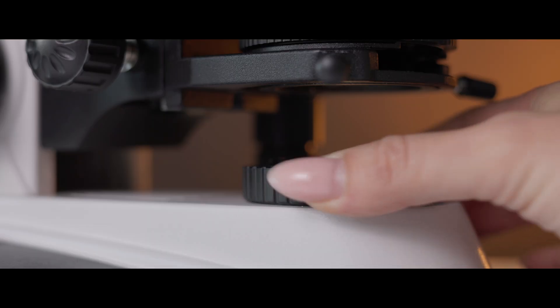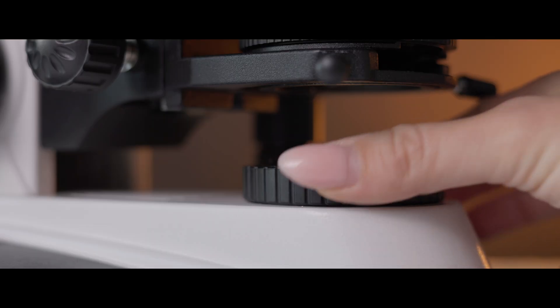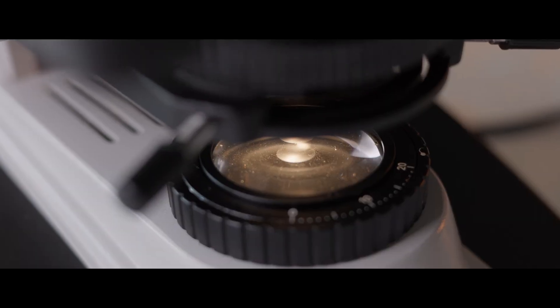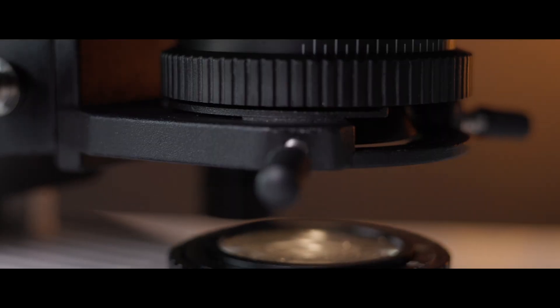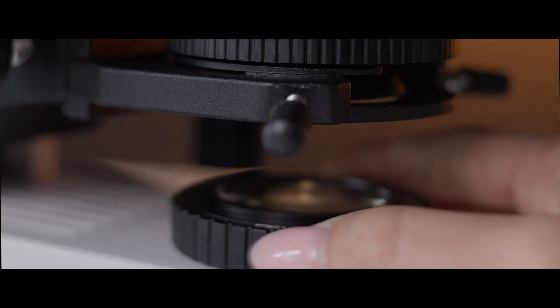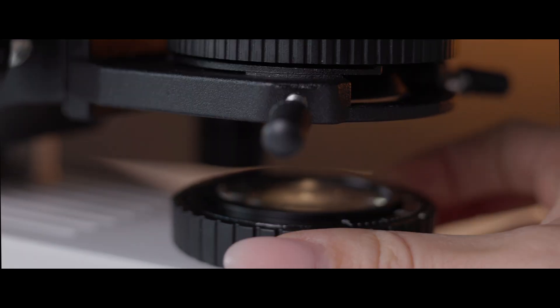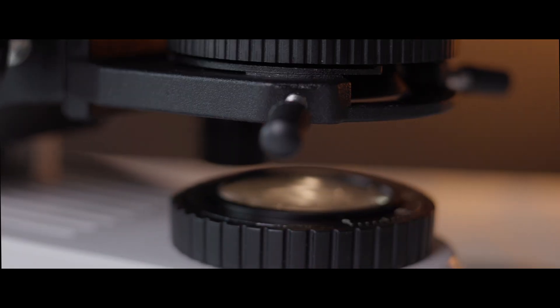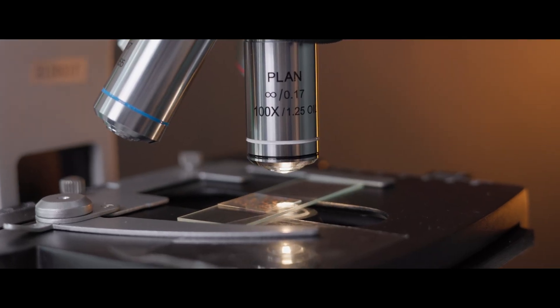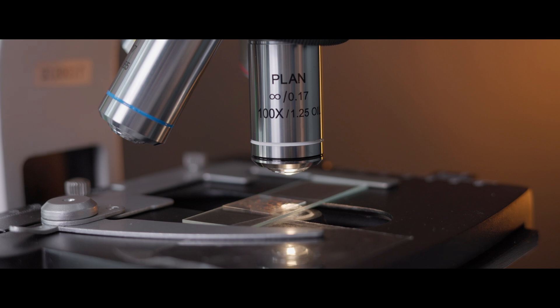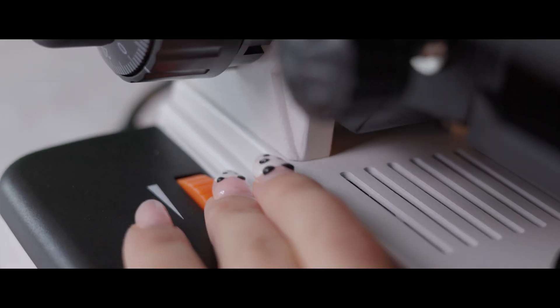When it comes to illumination, the OM139 really shines—literally. You've got a variable intensity tungsten halogen lamp, and the Koehler condenser makes sure every sample is lit perfectly. The 1.25NA Abbe condenser with an iris diaphragm and filter holder gives you total control over how you light your specimens, making everything super crisp and clear.